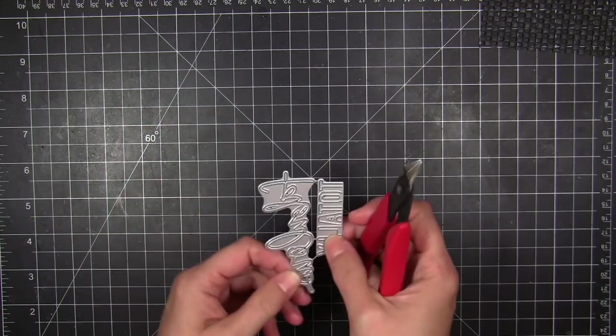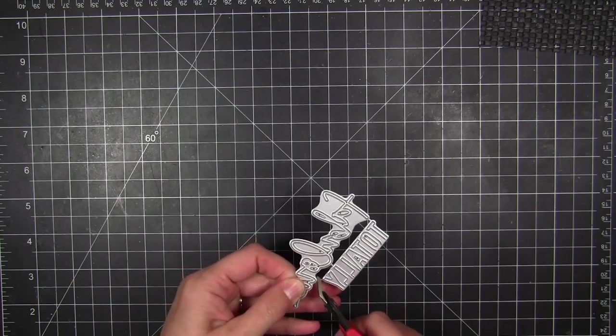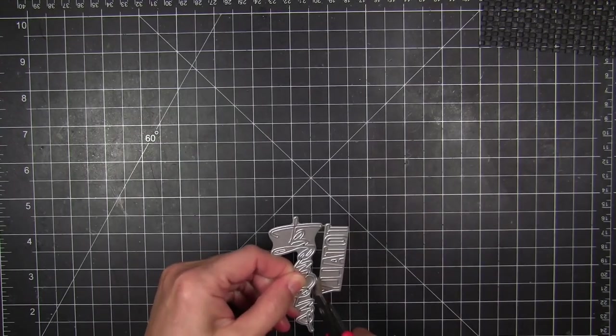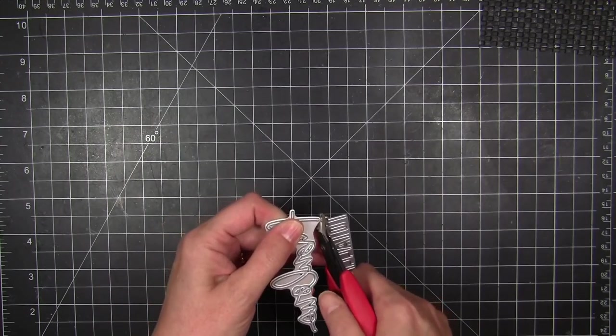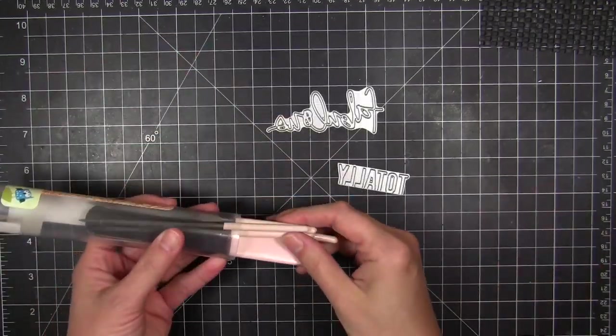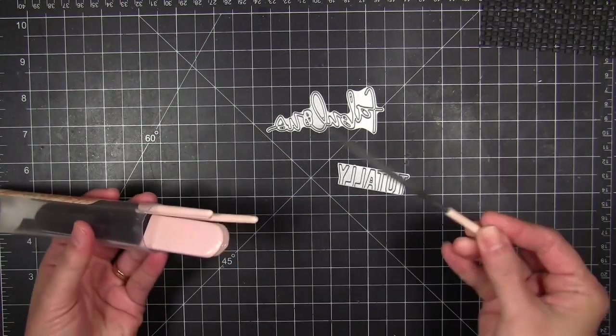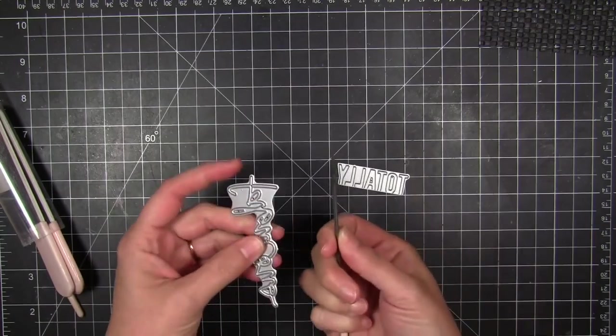This two piece set is going to come in the Ellen Hudson Signature Packaging. I'm going to separate these dies by snipping them apart where the tines connect them. And then if there's any sharp edges that are exposed from those little nubs that are left over from the tines,